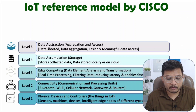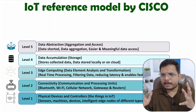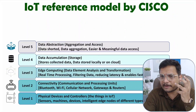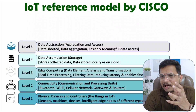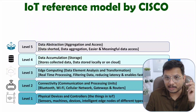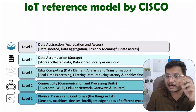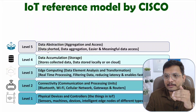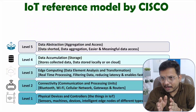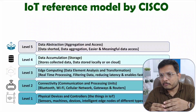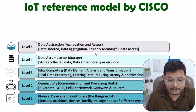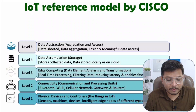Level five is data abstraction, where we perform aggregation and access of data. In an IoT ecosystem we are continuously sensing data — temperature, moisture, weather, and many other parameters. Data aggregation is essential because we need to sort the data first, identify what is meaningful, and then provide access. If all data is accessed together the response becomes slower, so only meaningful data is used to provide responses to actuators.